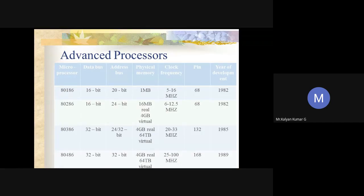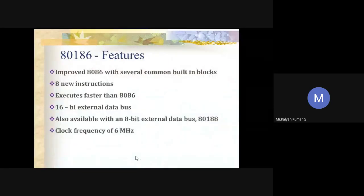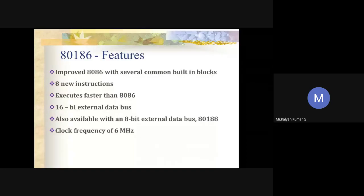You can also note the pin count and year of development for each processor. Moving on to the features of 80186: it was developed by Intel in the year 1982. It is actually an improved version of the 8086, with several common built-in functions like a clock generator.